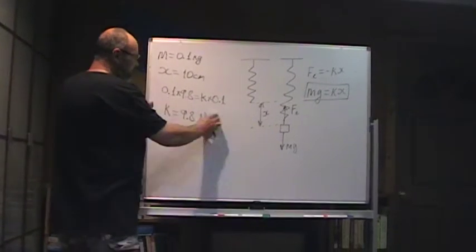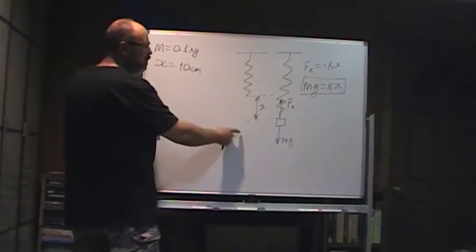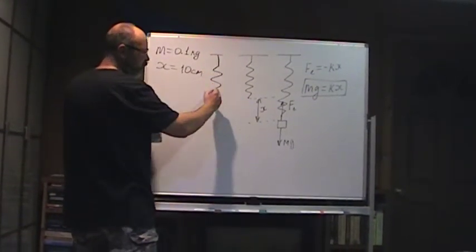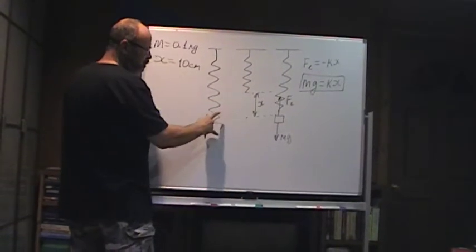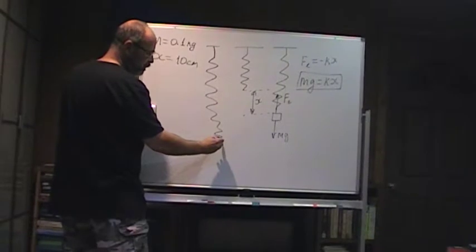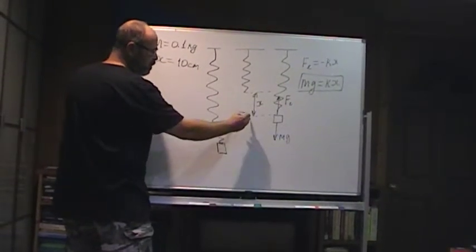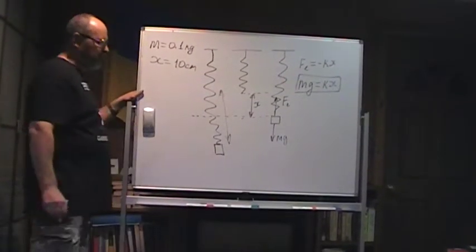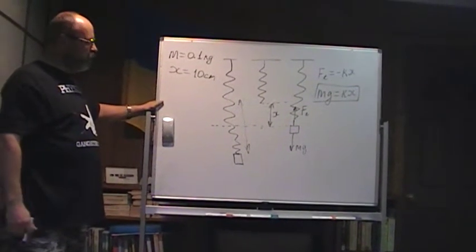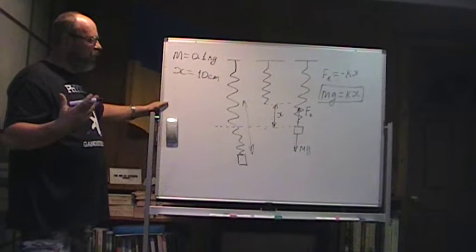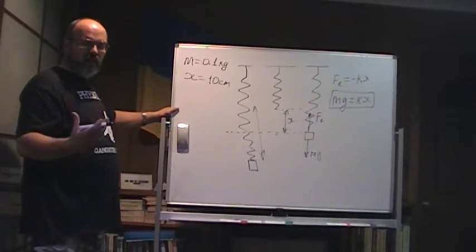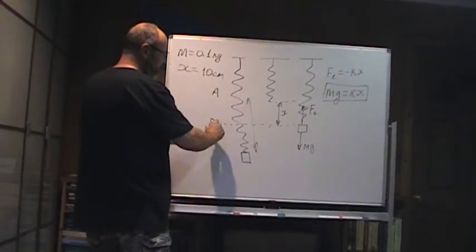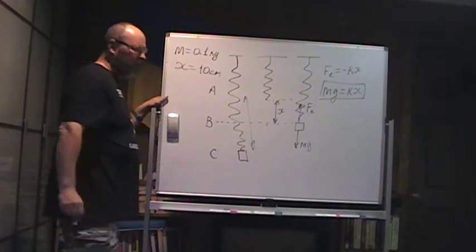Now, when we drop the spring, drop the mass, it will pass the equilibrium position and it will start to oscillate between those positions, oscillating up and down. Let's see what energy the system will have at each point. Let's name top point A, middle B, and bottom C.